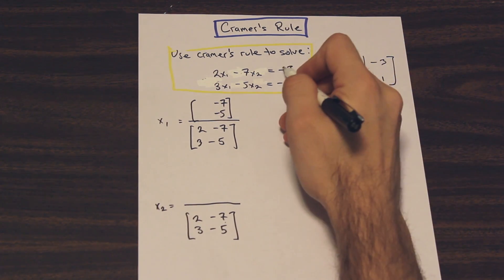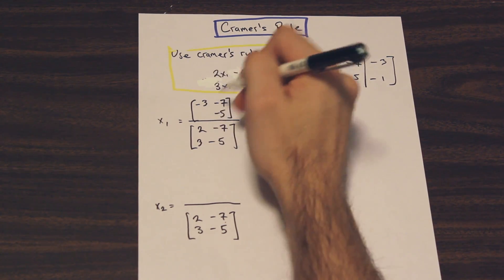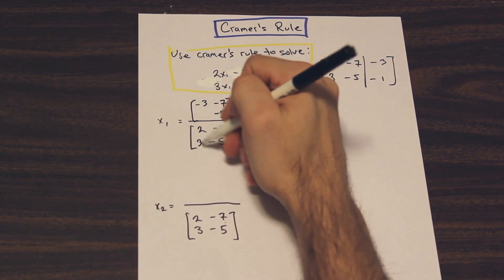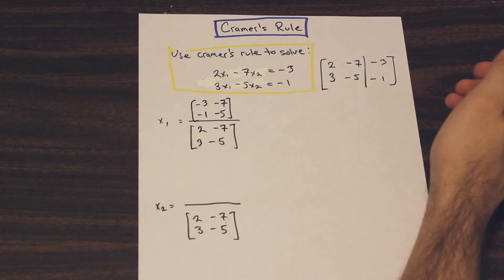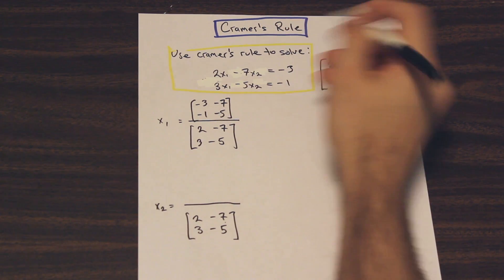And we're going to take negative 3 and negative 1, so the values that are on the other side of the equation, and we're just going to write those in place of the first column of the matrix here. So these values stay the same, and then we take these and put them into the first column.